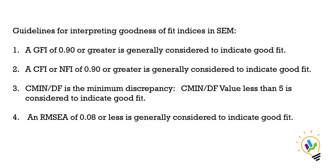To summarize: GFI should be greater than 0.9, CFI must be greater than 0.9, CMIN/DF must be less than 5 (less than 3 is very good), and RMSEA must be less than 0.08. Some researchers say RMSEA must be less than 0.05 for an excellent fit, but generally less than 0.08 is acceptable and considered a good fit.